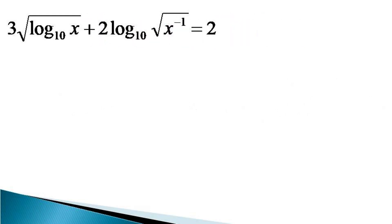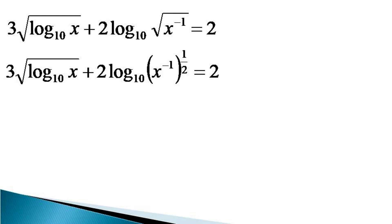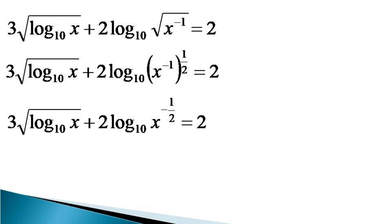To solve this equation, we write the second term on the left hand side as 2 into log of x raised to the power minus 1 raised to the power half, to the base 10. The power half multiplies to the power minus 1, and the equation becomes 3 root log x to the base 10, plus 2 log of x raised to the power minus half to the base 10, is equal to 2.